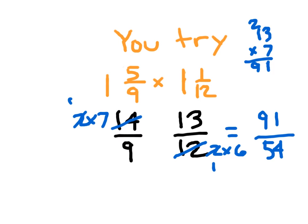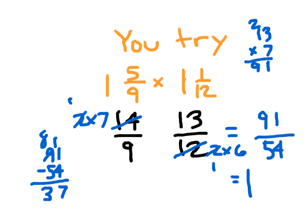54 goes into 91 one whole time. What's remaining would be the answer for 91 minus 54, which is 37. So the remainder is 37 fifty-fourths. 37 being a prime number, this is in simplest form. The answer is 1 and 37 fifty-fourths.